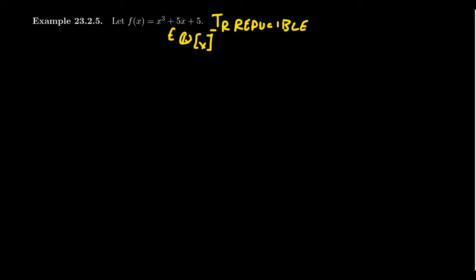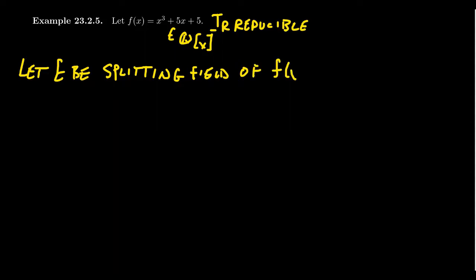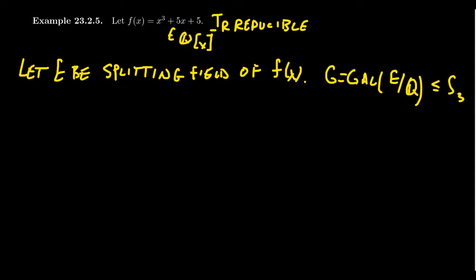Since f is irreducible, we let E be the splitting field of our polynomial f. Because f is irreducible, the three roots of f are all conjugates of each other inside the algebraic closure, and every field automorphism permutes conjugates to conjugates. We take G to be the Galois group of E over Q — the Galois group of the polynomial. We can naturally view this as a subgroup of S3, which has order 6.